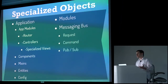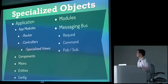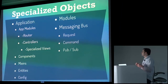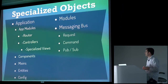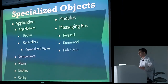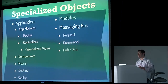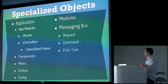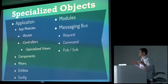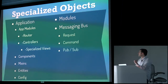We also have this specific notion of a module — a namespace, a grouping of specific behaviors and objects with certain sets of responsibilities. The last thing we have is a messaging bus for requests, commands, and pub/sub. Even though we have lightweight events in Backbone, the messaging bus moves those responsibilities into the application. Instead of calling things directly, you'll go through this.